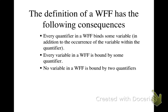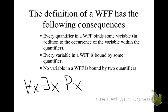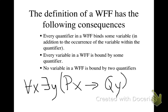The last consequence is that no variable in a well-formed formula is bound by two quantifiers. You couldn't have something like 'for all X, there exists an X, PX' — that doesn't make sense. You can have multiple quantifiers, but they need different variables. So you could have 'for all X, there exists a Y, such that if PX then QY' — that would be a well-formed formula, because PX is bound by 'for all X' and QY is bound by 'there exists a Y.'